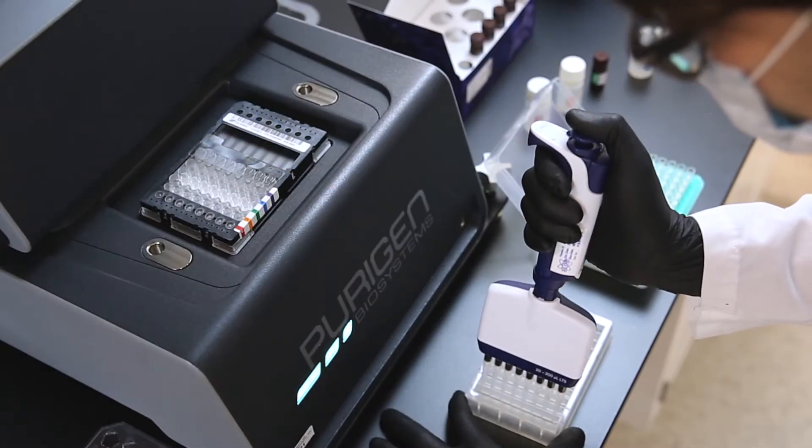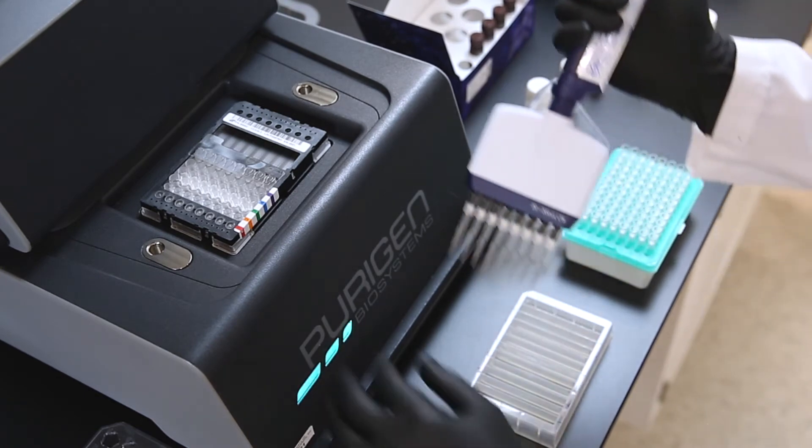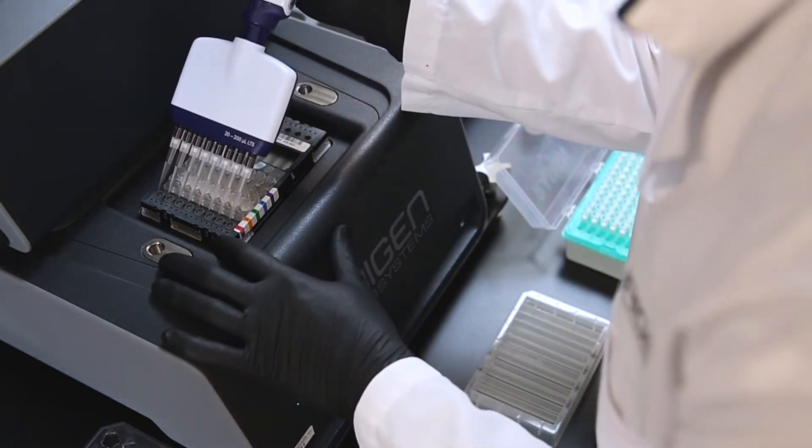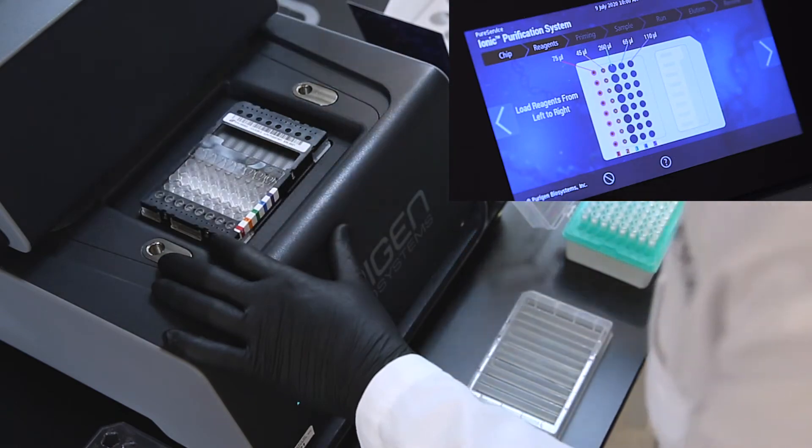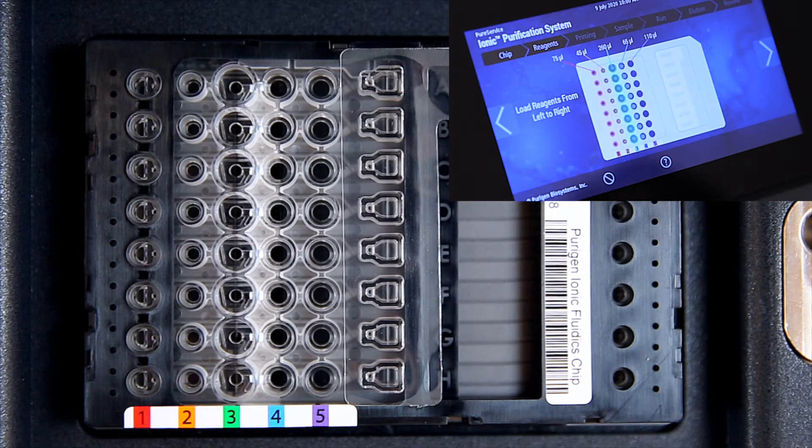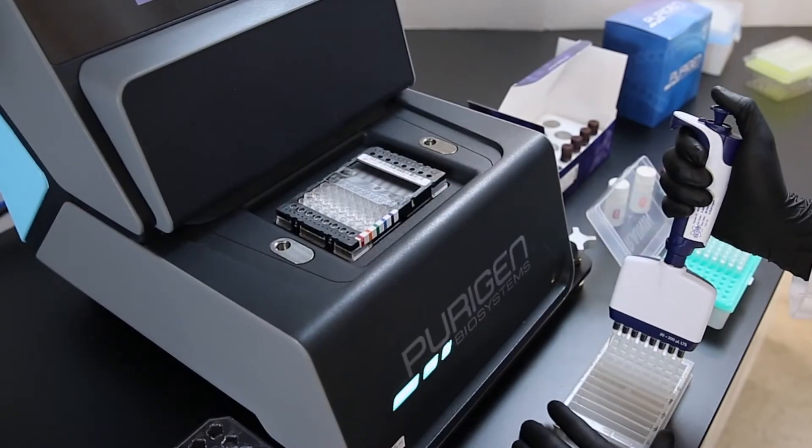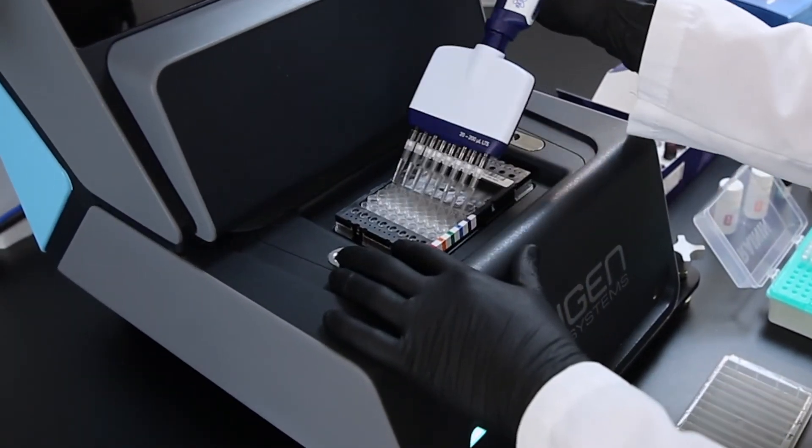Using a multi-channel pipette and following the guidance on the touch screen, buffer from the reservoir column labeled number 1 is transferred into the column of wells on the fluidic chip that correspond to the wells highlighted in red on the touch screen. These wells are also labeled number 1 in red on the fluidic chip itself. The process is repeated for all buffer additions indicated by the touch screen.